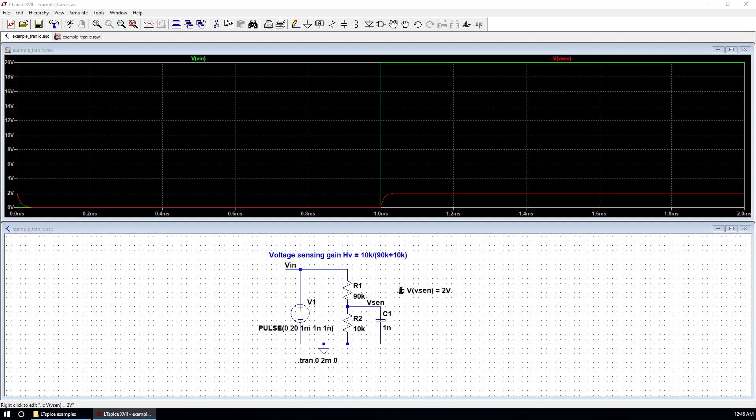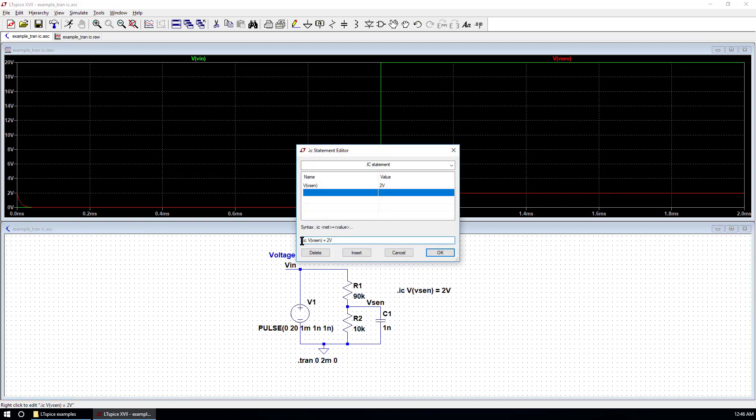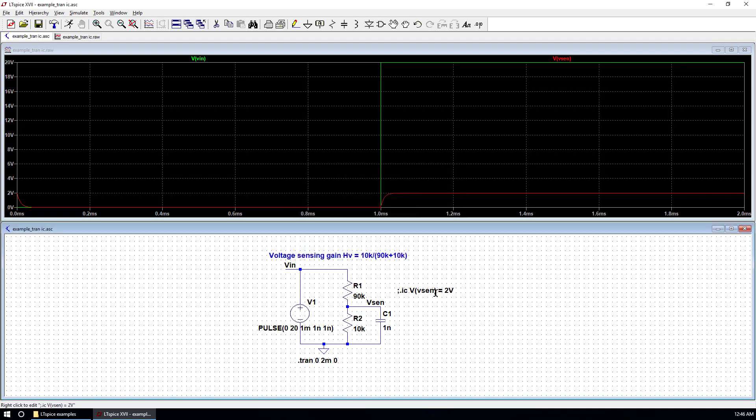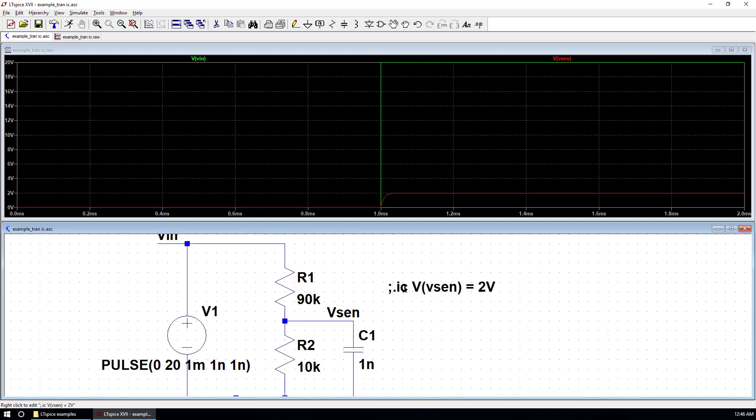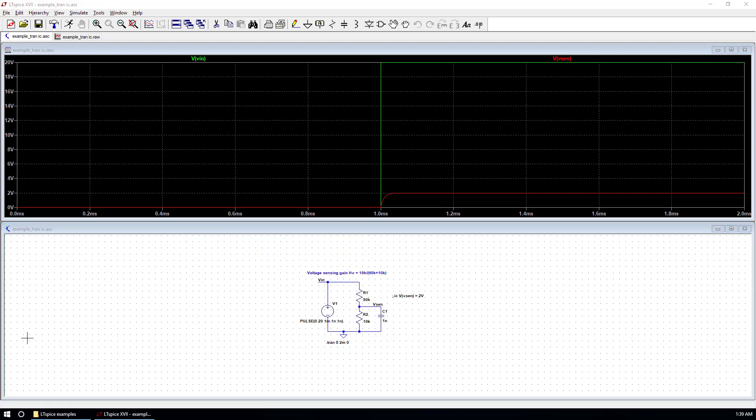To comment out this directive, you can just put a semicolon at the beginning. So now it becomes a comment. If you run the simulation, you can see the initial condition is deleted just by using this simple trick.